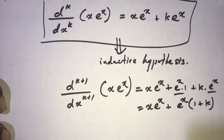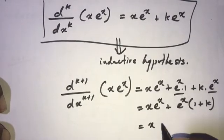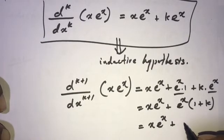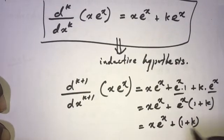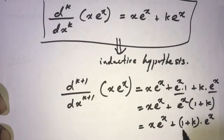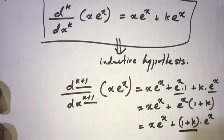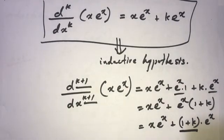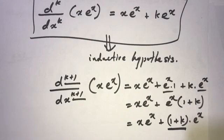Taking eˣ as a common factor, we get x·eˣ plus (1 plus K)·eˣ, which equals x·eˣ plus (K+1)·eˣ. Since K+1 replaces K, the statement is proved true for n equal to K plus 1. This completes the proof by mathematical induction. If you like these videos, please subscribe. Thank you for watching.